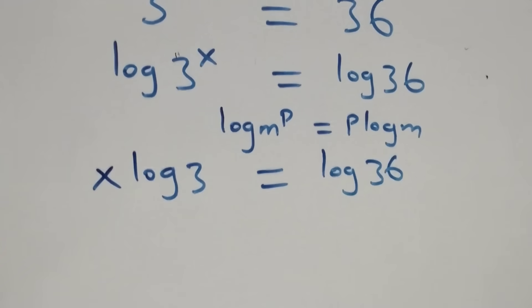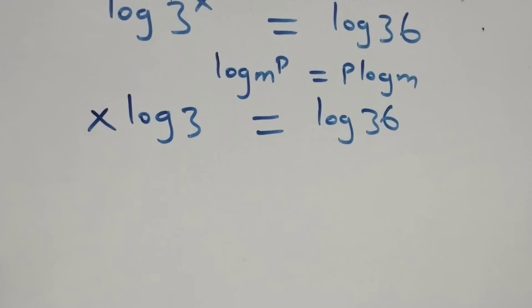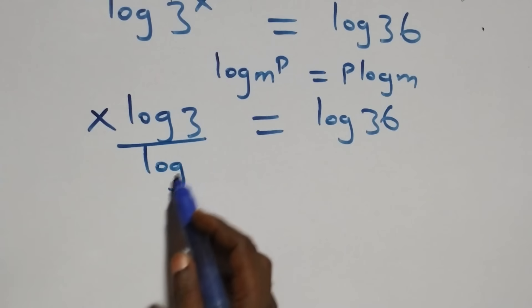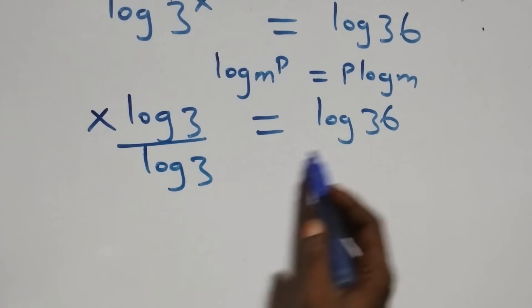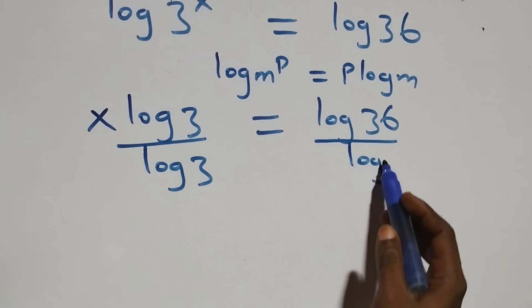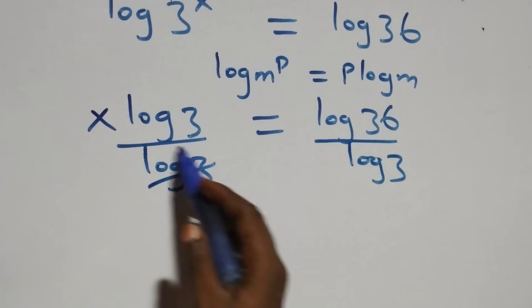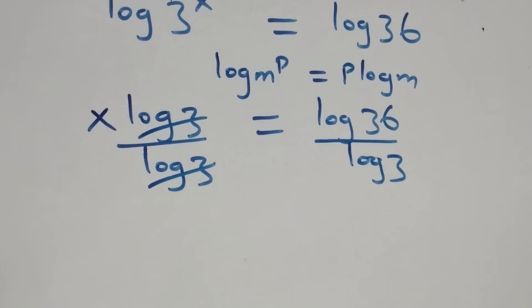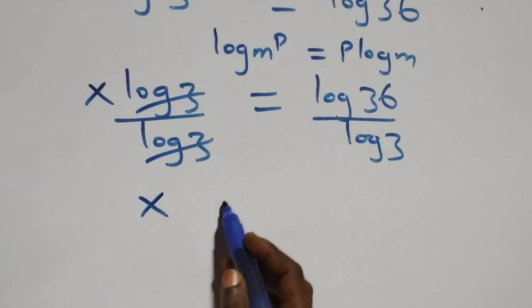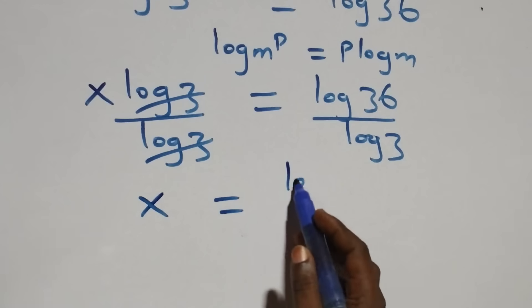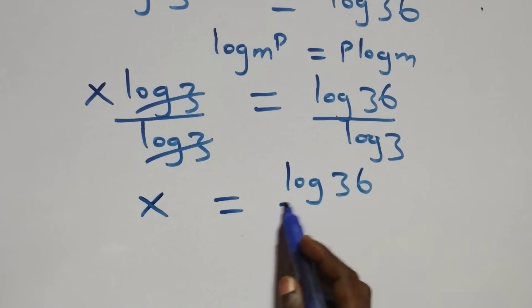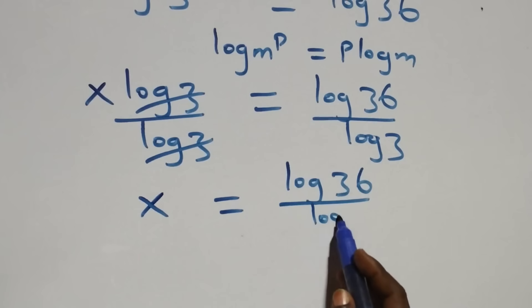We divide both sides by log 3. The log 3 terms cancel each other, and we have x left, which equals log 36 over log 3.